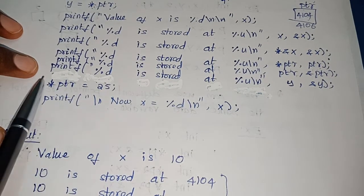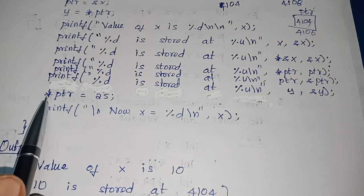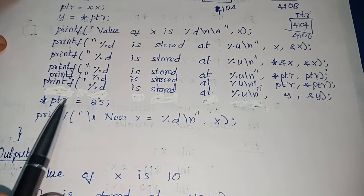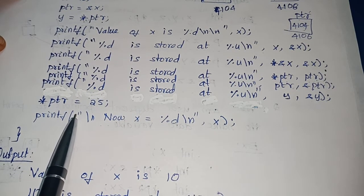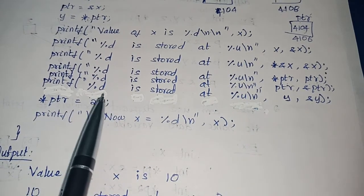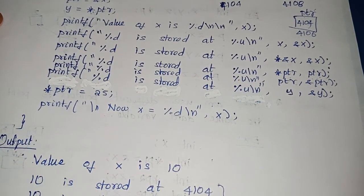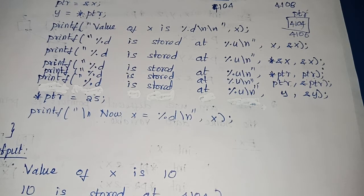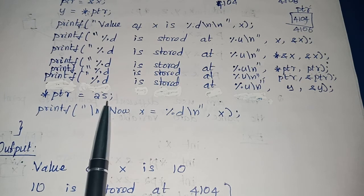That is the more important point to be noted in this example — I haven't used x directly; I have just used the address and changed x. This process is more effective in functions whenever we want to return more than one value. Whenever we use pointers and change values using pointers, the changes take place at that particular address, so everything is also reflected back in the original main function — the changed value can be accessed from main as well.